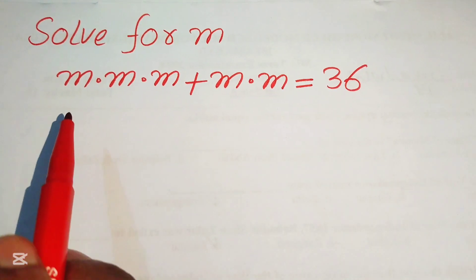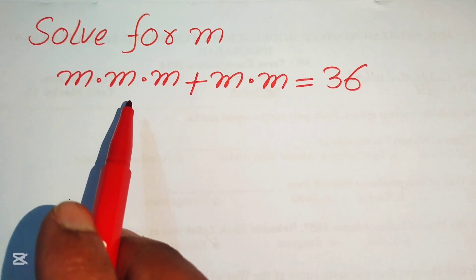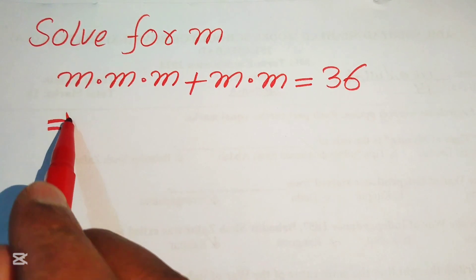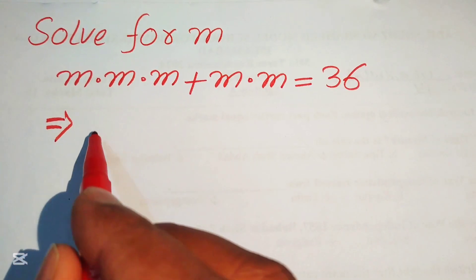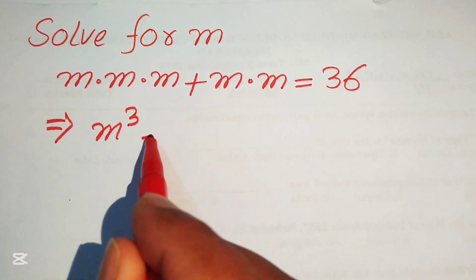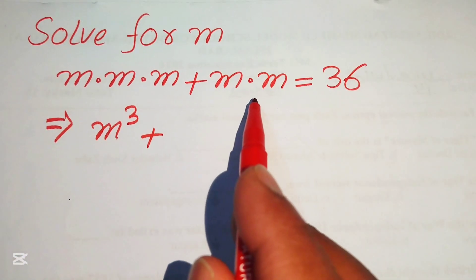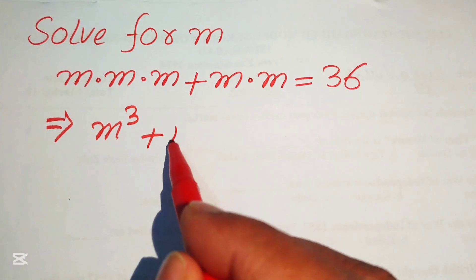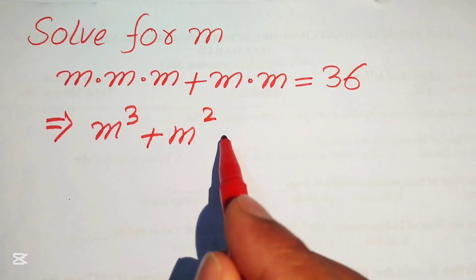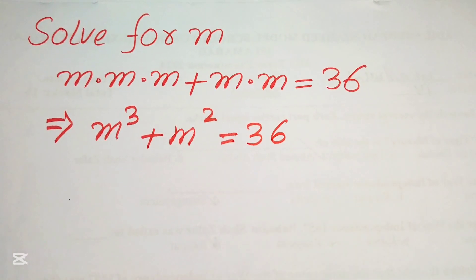Here you see that m is multiplied 3 times, so we write this as m cubed, and plus m is multiplied 2 times, so we write it as m squared equals to 36.